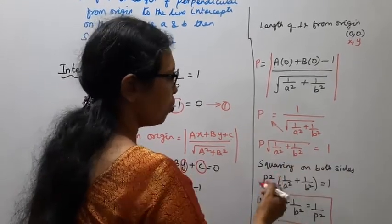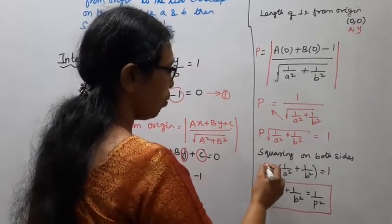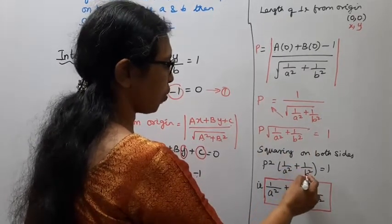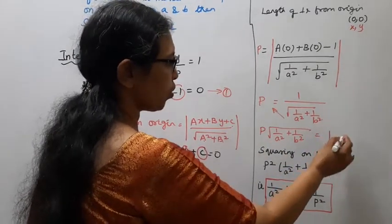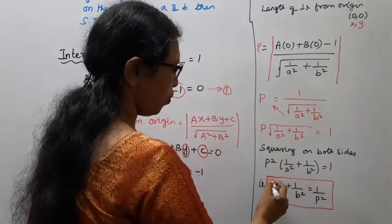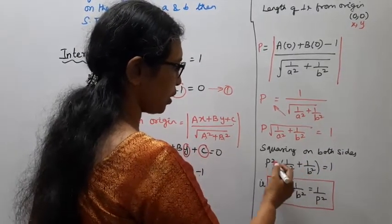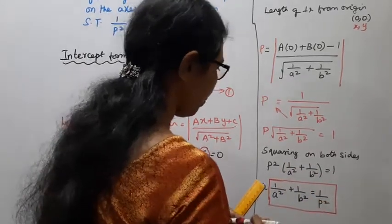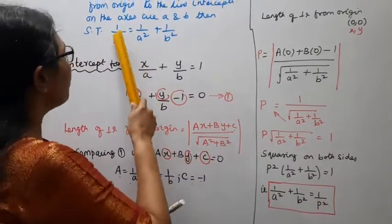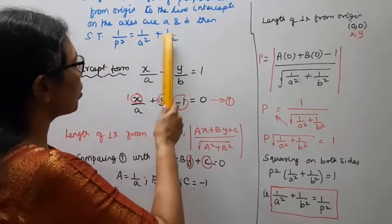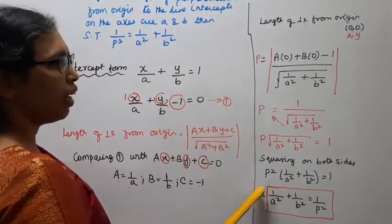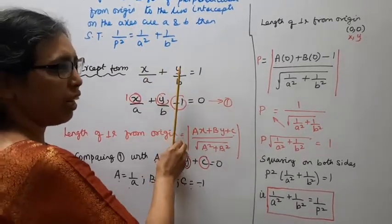Squaring on both sides: P square times 1 by a square plus 1 by b square equals 1. Therefore, 1 by P square equals 1 by a square plus 1 by b square. Hence proved.